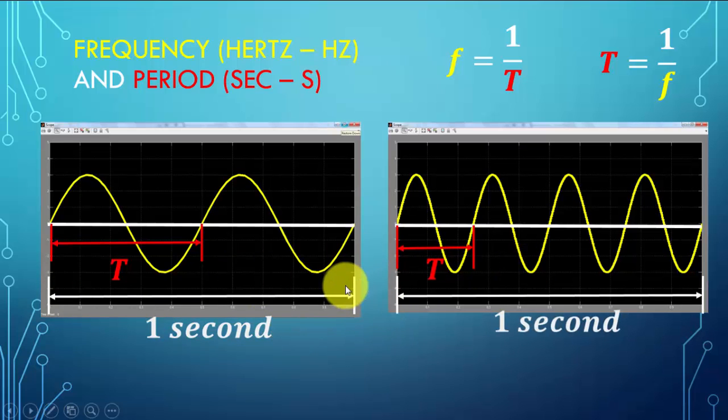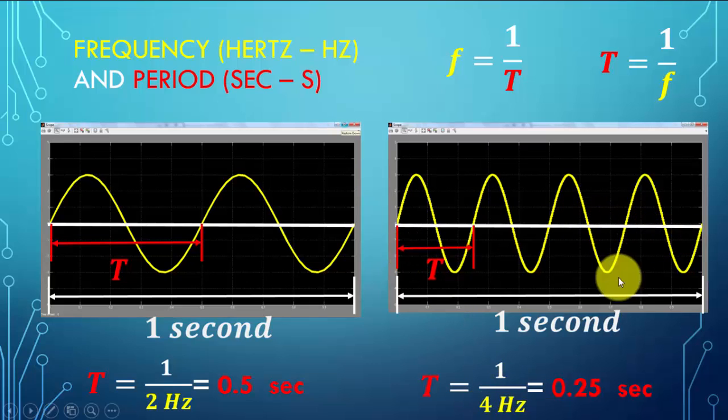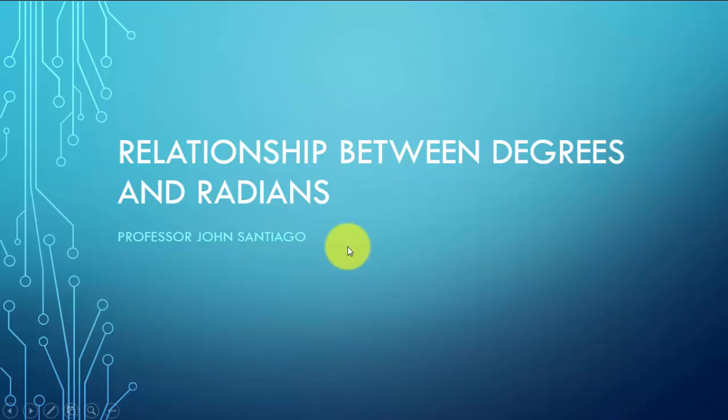Since we have two cycles in one second, this is 2 Hz, so T equals 1/(2 Hz), which leads to 0.5 seconds. On the right side, T equals 1/(4 Hz) since we have four cycles over one second, so 1/(4 Hz) leads to 0.25 seconds.